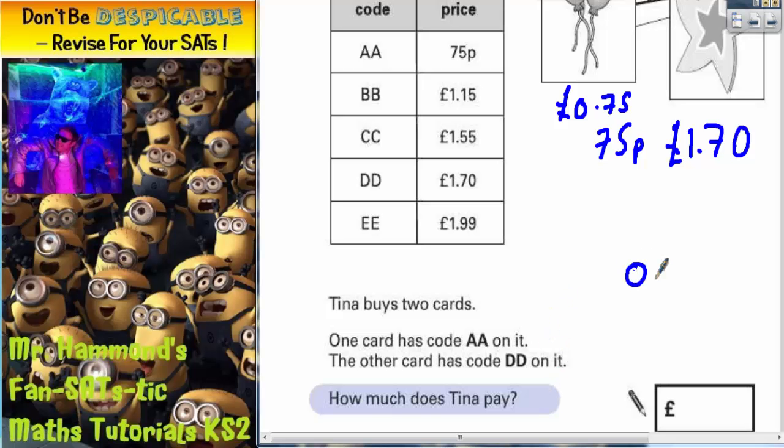So we've got 75p or £0.75 in other words and £1.70. If we add them together using a simple column method, we'll get the total price that she has to pay. 5 plus 0 is 5, 7 plus 7 is 14, carry the 1, 0 plus 1 is 1, plus 1 is 2. Don't forget to put your decimal point and your pound sign in. So Tina is paying £2.45.